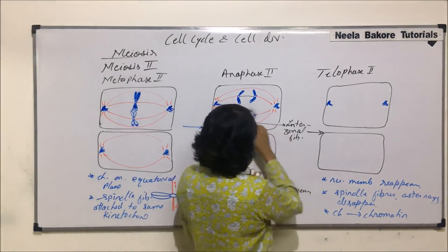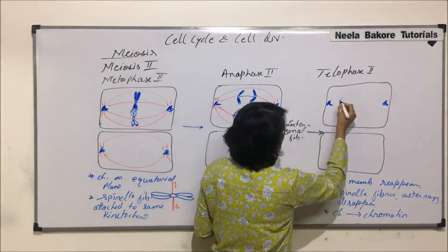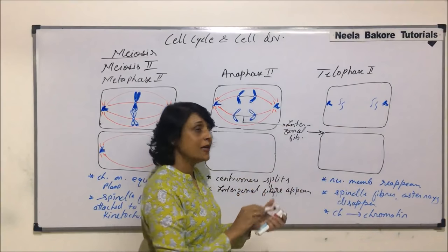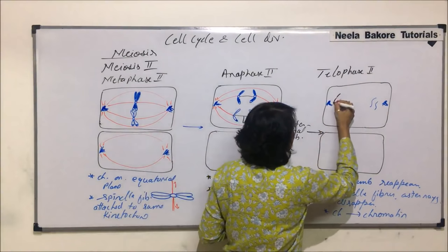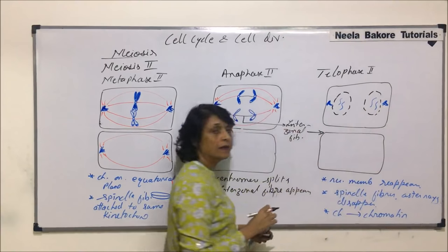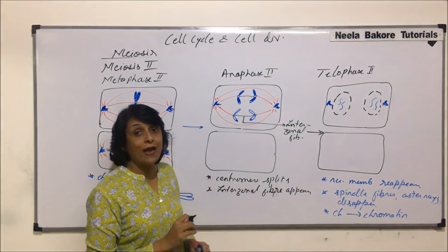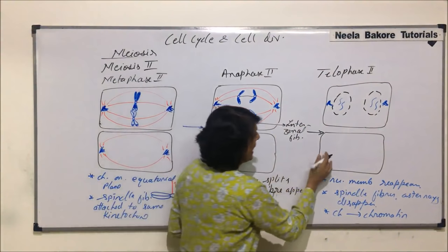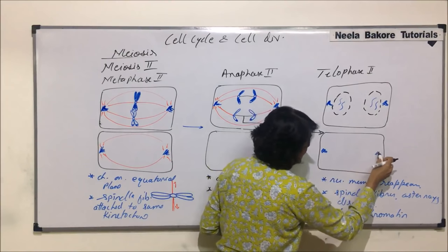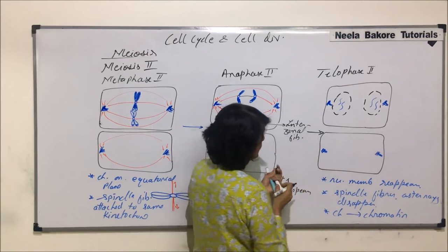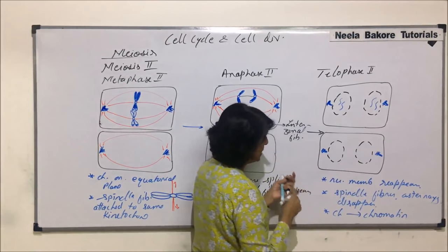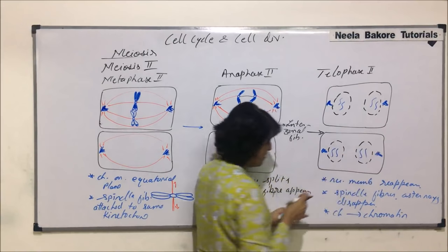Let us show this here. These two chromosomes have become thinner. The two chromosomes are on this side, and the nuclear membrane has reappeared around it. So nuclear membrane has reappeared and we start seeing the nucleus — karyokinesis has taken place. I am going to draw the change in this cell also so that we see all the daughter cells. Nuclear membrane would reappear here also.